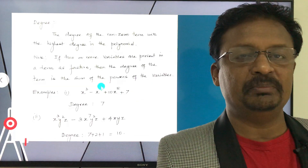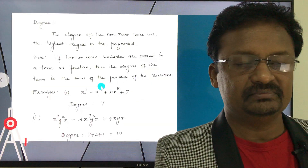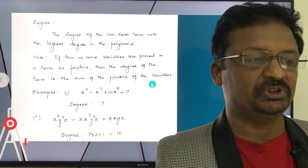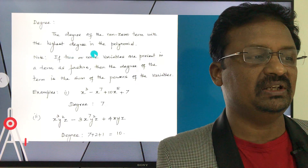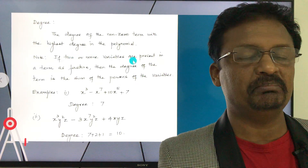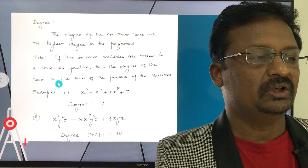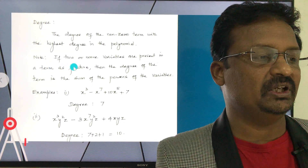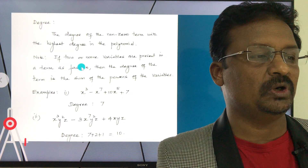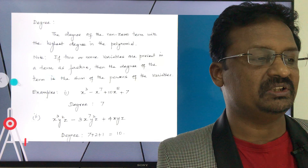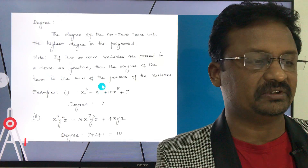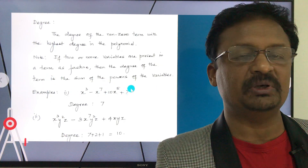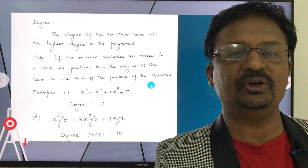What is the degree of the polynomial? The degree is determined by the nonzero term with the highest degree. Note: if two or more variables are present in a term as factors, then the degree of that term is the sum of the powers of the variables.